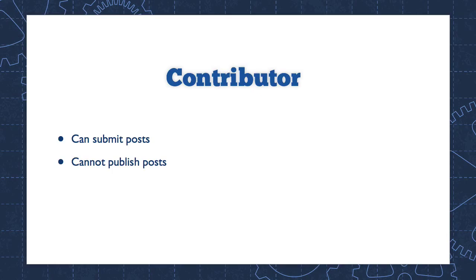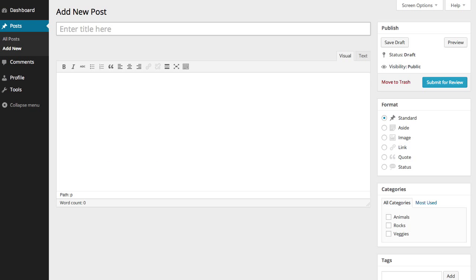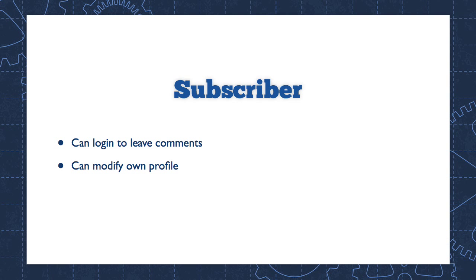Next up is contributor. If you are trying to implement an editorial workflow where you've got an editor reviewing content before it goes live on your website, your authors should be set up as contributors. Contributors can log in and create posts and submit them, but they don't have the ability to publish those posts — a user with higher permission, an administrator or an editor, would have to publish them. When a contributor logs in and tries to create a post, you'll notice in the publish box that the button that formerly said 'publish' for an author now says 'submit for review.' So it's clear that the contributor is going to have to wait for an editor or administrator to review the post and determine that it should be published.